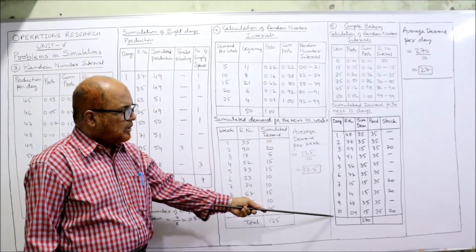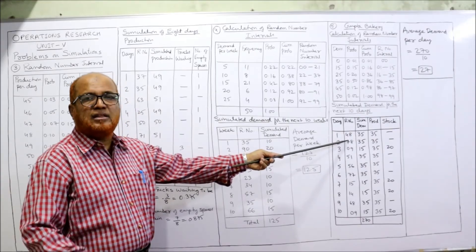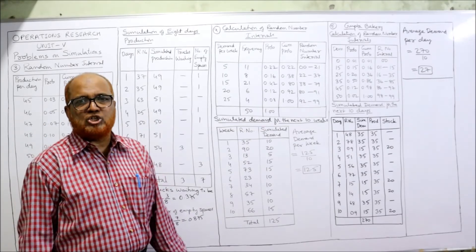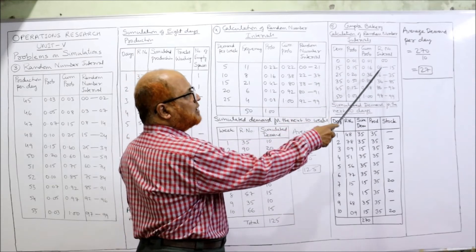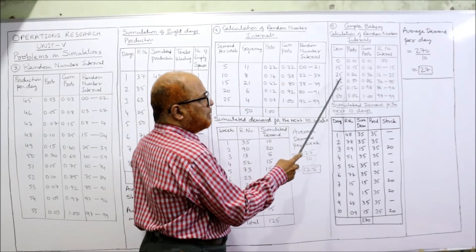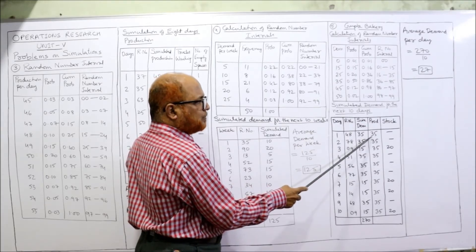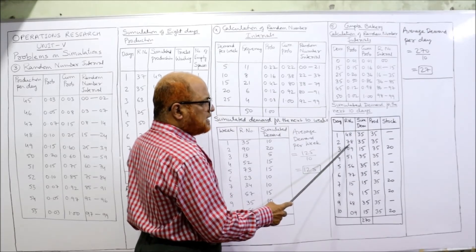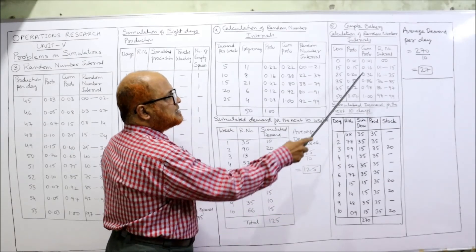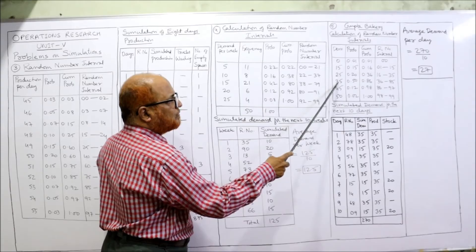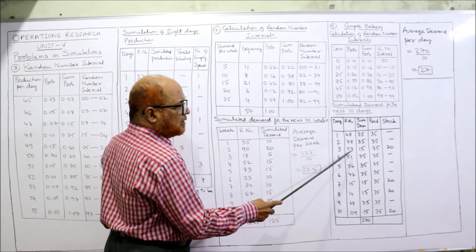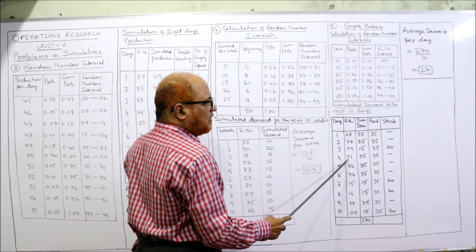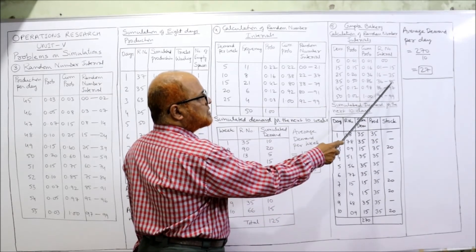Simulated demand for 10 days: days 1 through 10 with random numbers from the problem. Random number 48 falls between 36 to 85, so demand is 35. Random number 78 also falls between 36 to 85, so demand is 35. Random number 09 falls between 01 to 15, so demand is 15. Random number 51 falls between 36 to 85, so demand is 35. We locate each random number in the appropriate interval and record the corresponding demand.